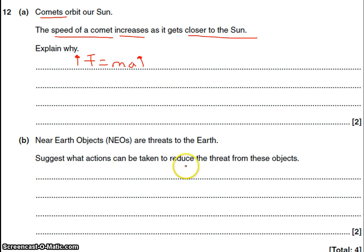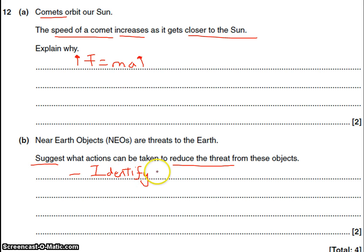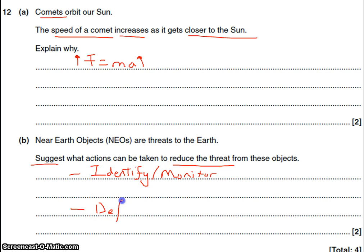This question is about monitoring near-Earth objects and what actions can be taken to reduce the threat. The first thing we need to do is identify near-Earth objects and then monitor their trajectory to make sure they're not on a collision course with Earth — we track them using satellites or telescopes. The other thing we could do is, if we suspected an NEO was going to collide with us, we would have to deflect it — not destroy it — using explosives to try to change the path of the comet or near-Earth object.